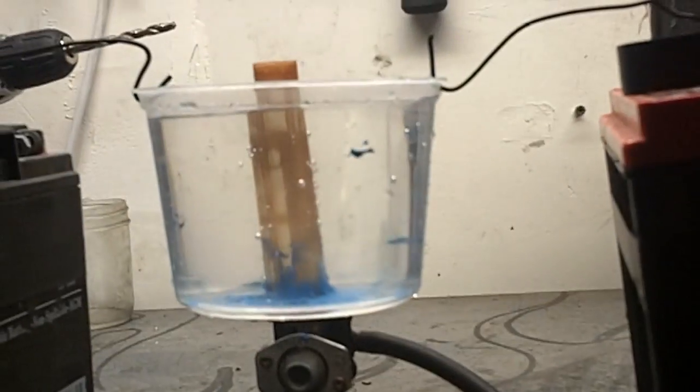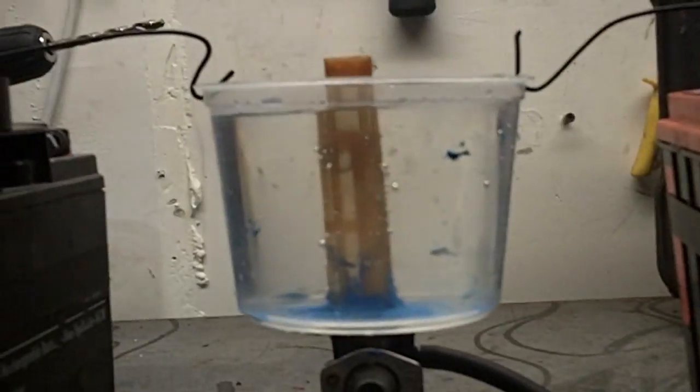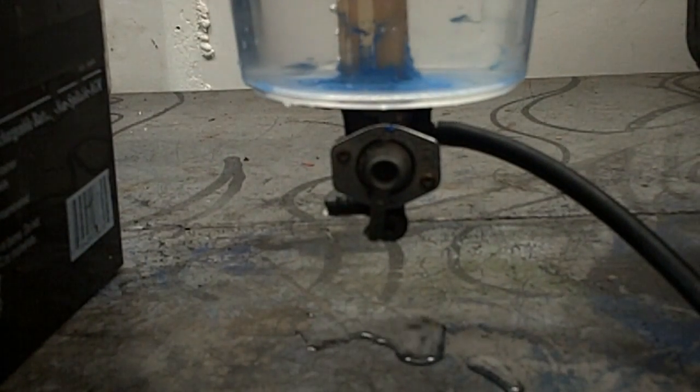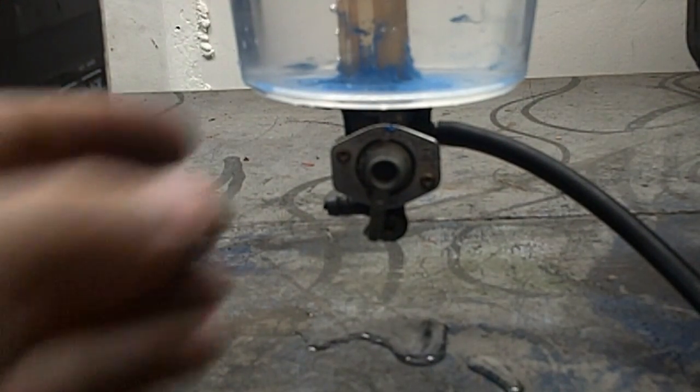And you can see the water now is right at the level of the on hose right there. So if this was gas and if this was inside a bike, the bike would be starting to sputter out and I'd be thinking to myself, well, I'm running low on gas.